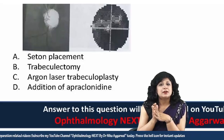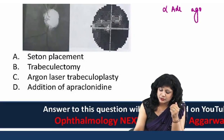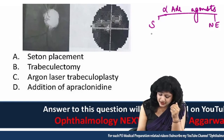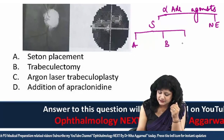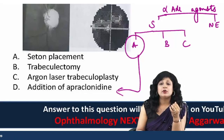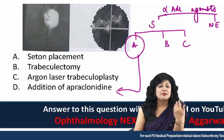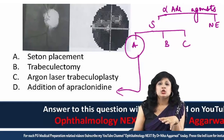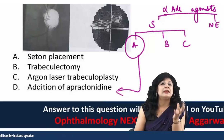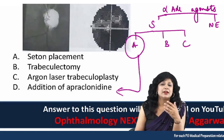Apraclonidine is an alpha-adrenergic agonist. Among selective alpha-adrenergic agonists, there are three drugs: apraclonidine, brimonidine, and clonidine. Apraclonidine is given before procedures where a rise in intraocular pressure is anticipated post-procedure, such as before trabeculoplasty. It is not a maintenance drug, so if a patient is already on anti-glaucoma drugs and not getting enough benefit, apraclonidine is not the answer.